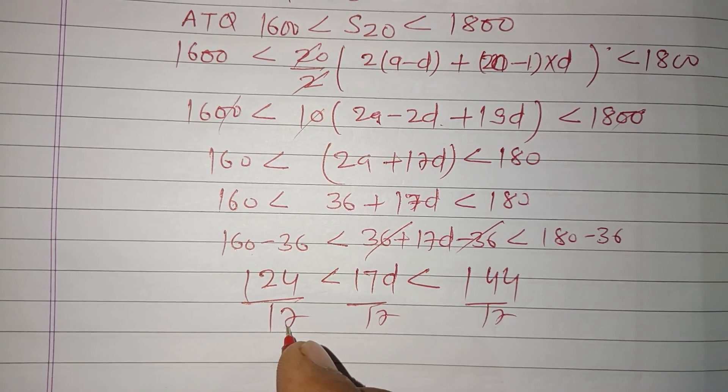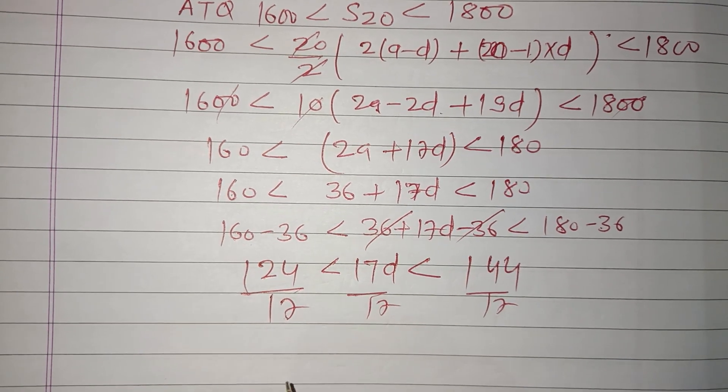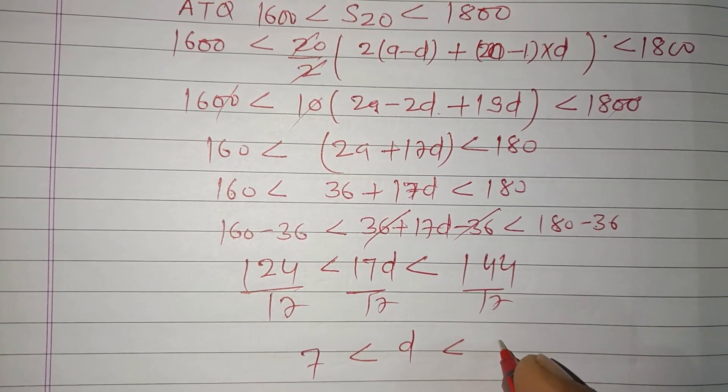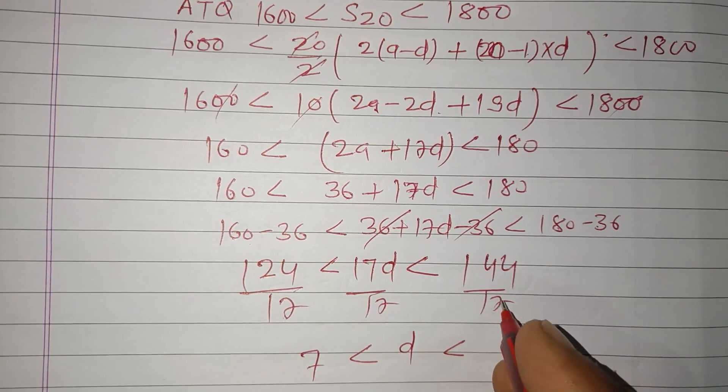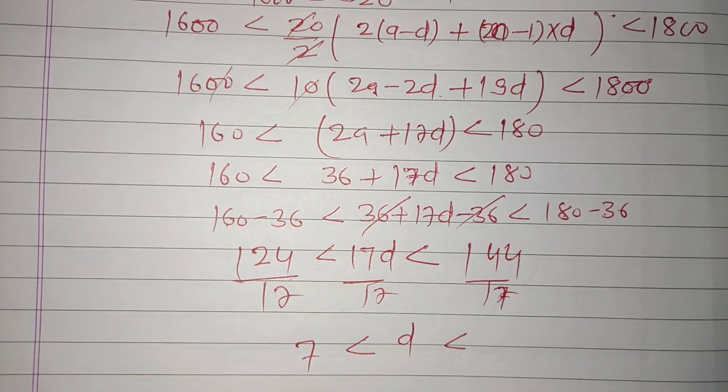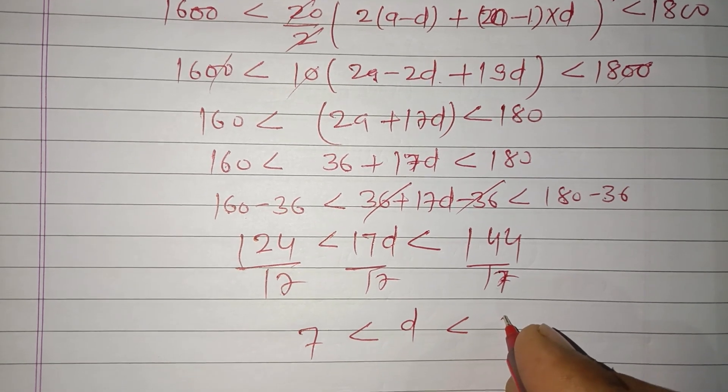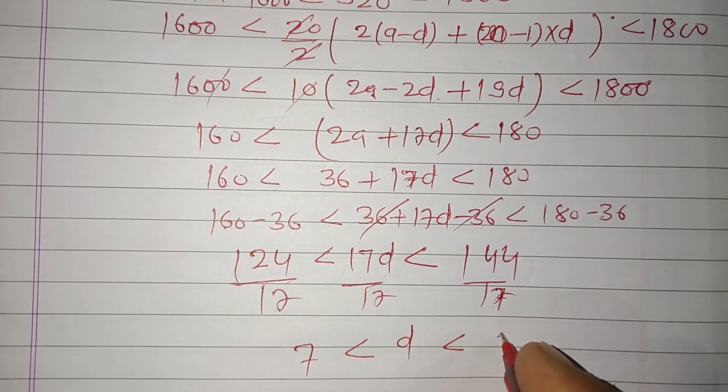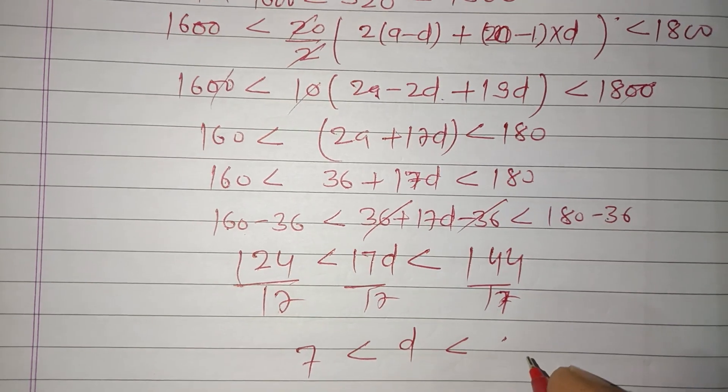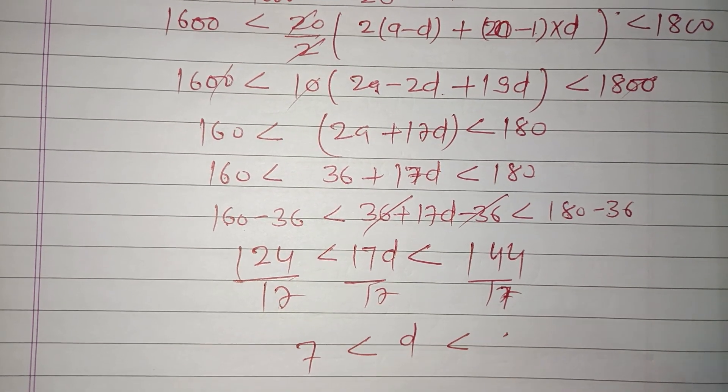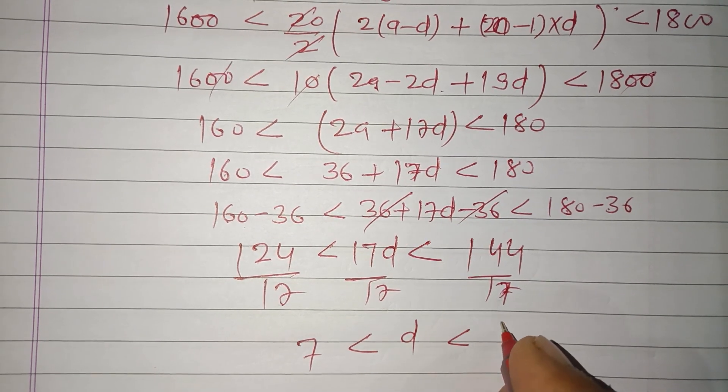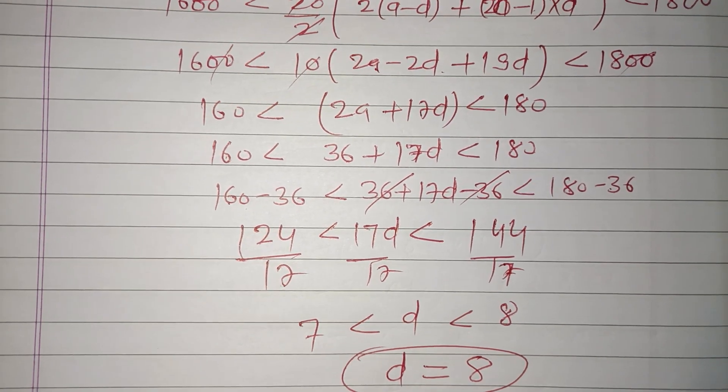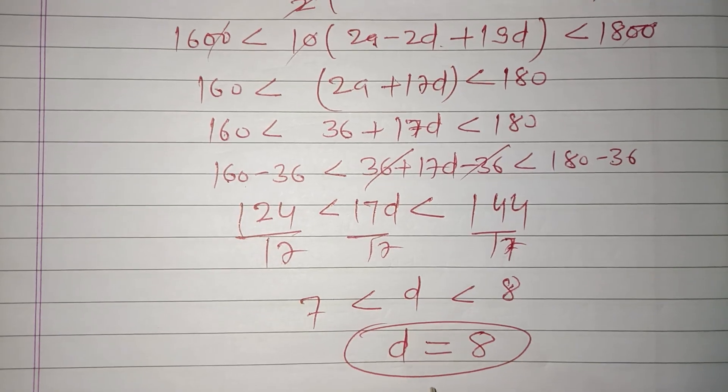17 times 7 is 119, 17 times 8 is 136, 17 times 9 is 153. So D lies between 7 to 9. That is 8, because terms are integers. So we take D is 8 here.